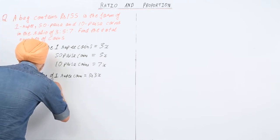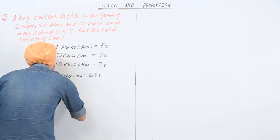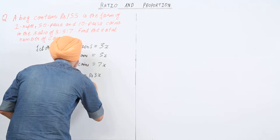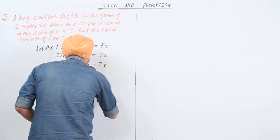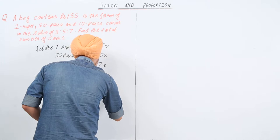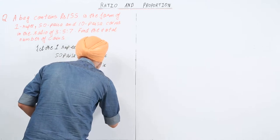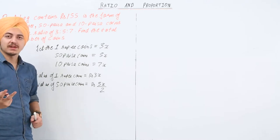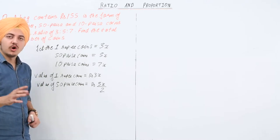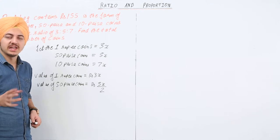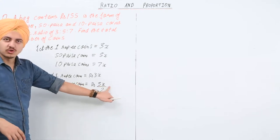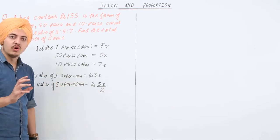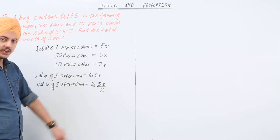The value of 50 paisa coins is equal to rupees 5x divided by 2. Why? Because 2 fifty-paisa coins make 1 rupee, or the value of 1 fifty-paisa coin is half a rupee. So 5x is the total number of 50 paisa coins, and the total value is 5x divided by 2.